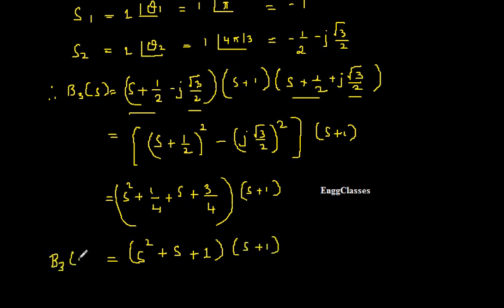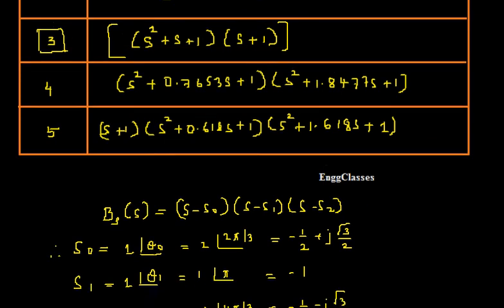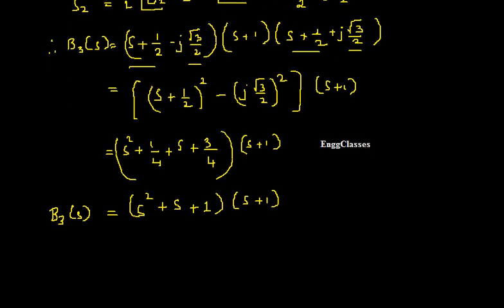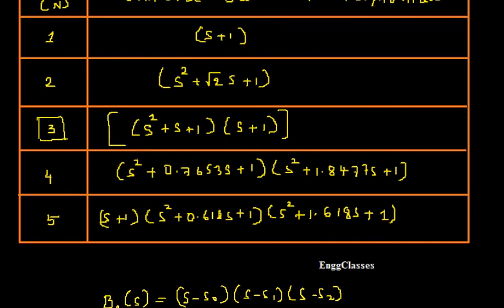So this I call the Butterworth polynomial for n equal to 3. Is that the same as what I have prepared in the table? Yes, it is the same. Very much the same. So this is how we prove Butterworth polynomial B3 of S. This is the transfer function which has been written in factored form. So this is how we prove Butterworth polynomial for n equal to 3.